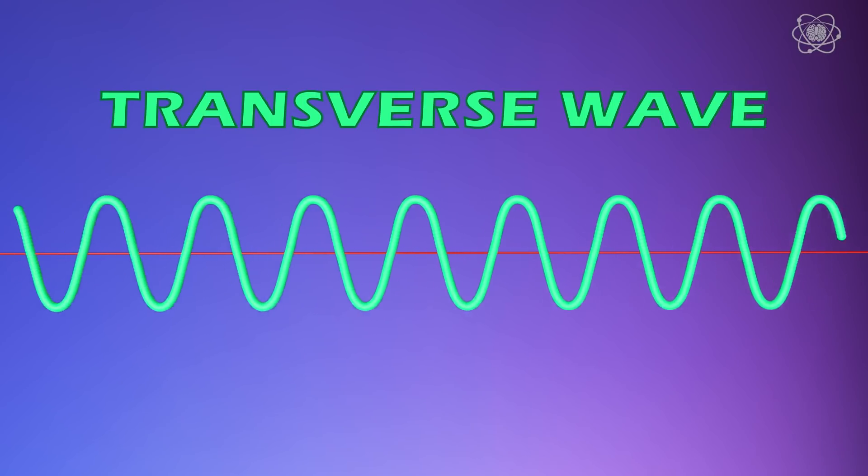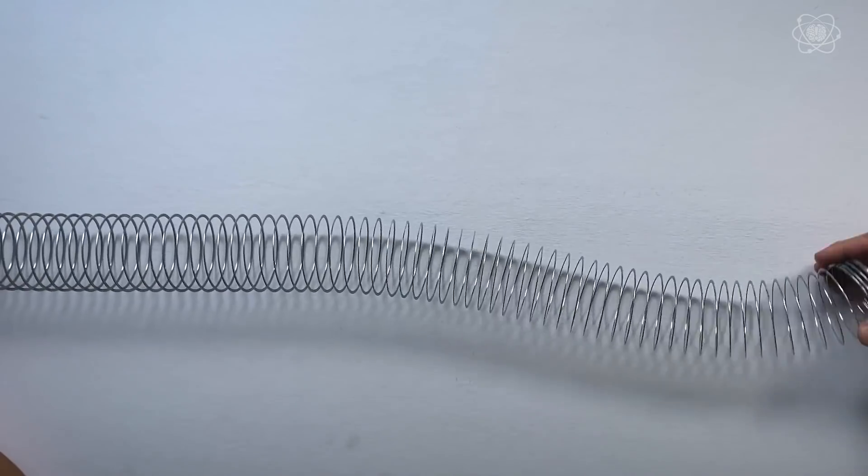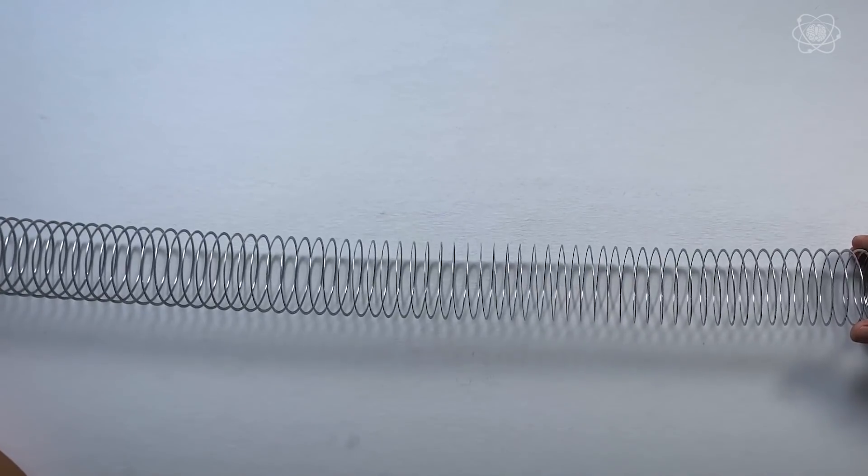That's what's called a transverse wave. So, longitudinal waves are when the individual coils are moving back and forth in the same direction that the wave is moving, and transverse waves are when the individual coils are moving perpendicular to the wave direction. Now, that's the secret behind an invisible TV.